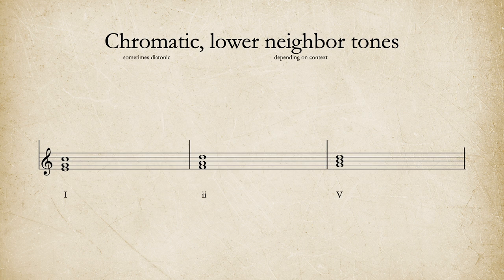In order to sound like Mozart, I recommend using accented chromatic lower neighbor tones — or more precisely, notes the semitone just below a chord tone, because sometimes in context they could be passing tones. Before we put those into our phrase, let's quickly review what that means.